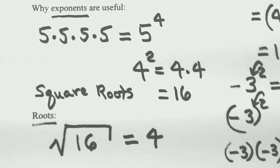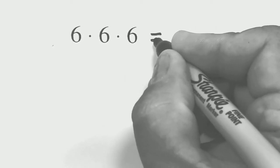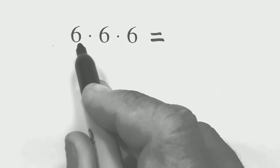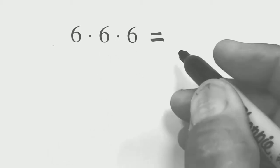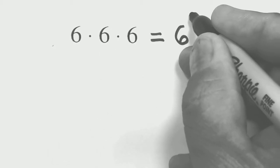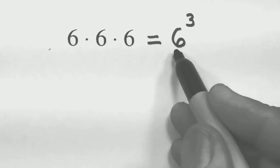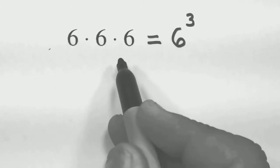Now let's look at some examples from our homework. Here's an example where you're asked to write an expression using an exponent — this is the reason exponents are important, they're a nice shorthand. There are 1, 2, 3 of these 6's multiplying each other, so in exponent notation we write that as 6 to the third power. This is much more compact than writing it all out.